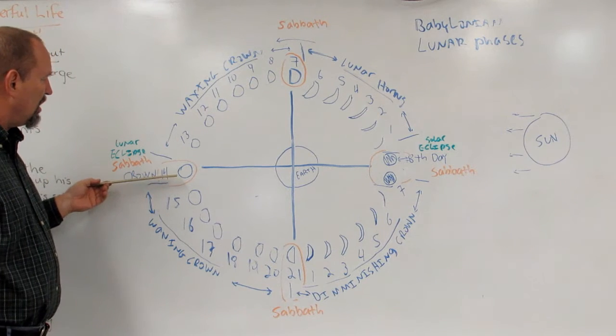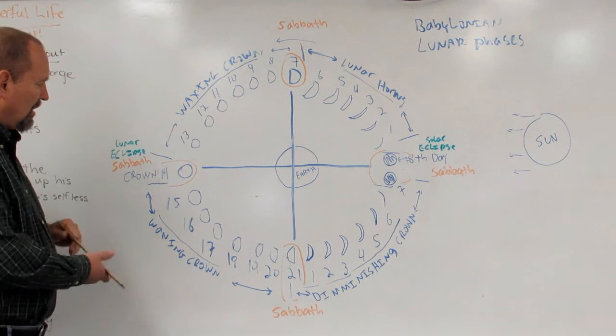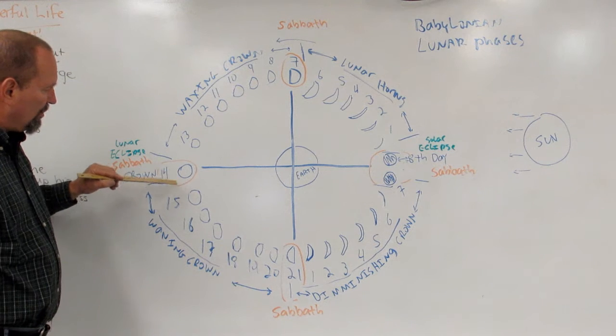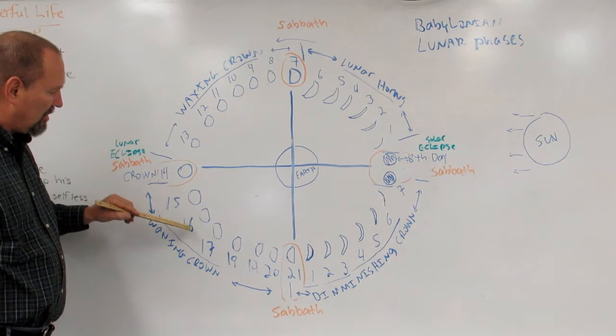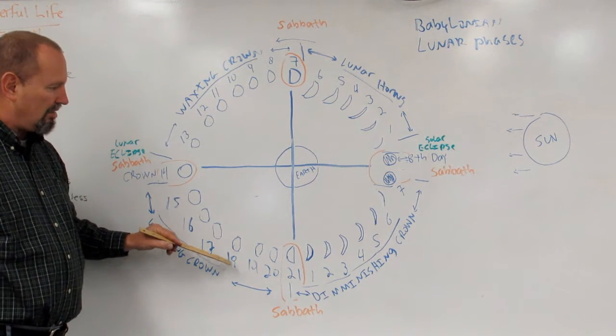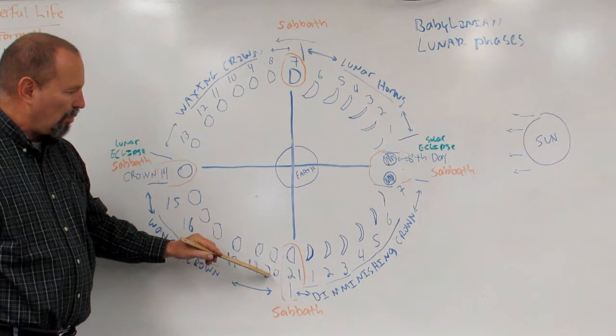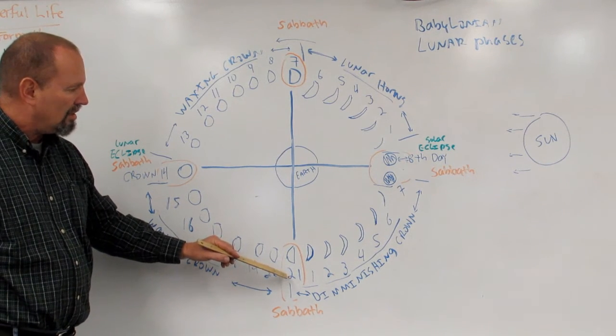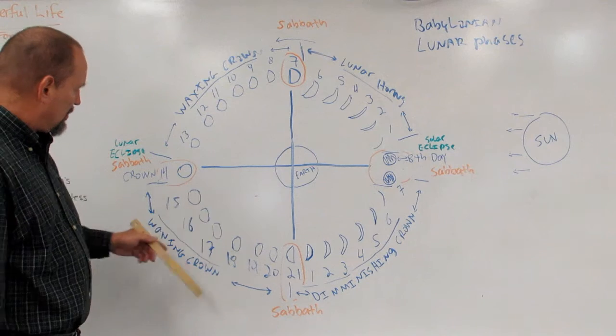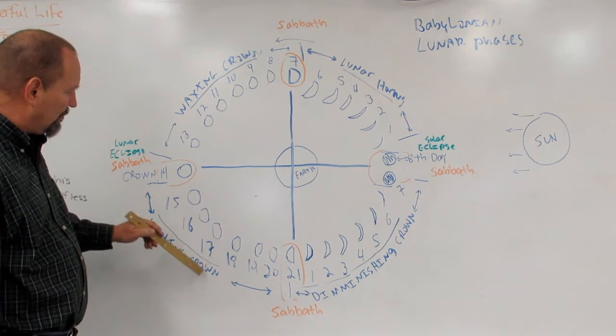Then it continues day fifteen, sixteen, seventeen, eighteen, nineteen, twenty, twenty-one with what's called the waning crown phase.